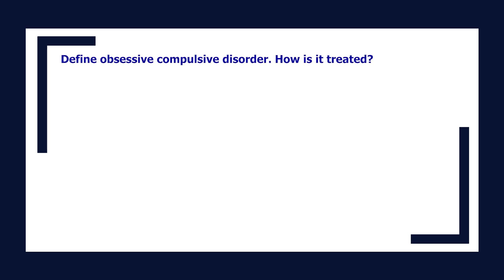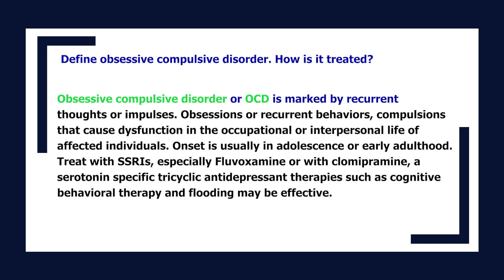Define obsessive-compulsive disorder and how it is treated. OCD is marked by recurrent thoughts or impulses (obsessions) or recurrent behaviors (compulsions) that cause dysfunction in the occupational or interpersonal life of affected individuals. Onset is usually in adolescence or early adulthood. Treat with SSRIs, especially fluvoxamine, or with clomipramine, a serotonin-specific tricyclic antidepressant. Therapies such as cognitive behavioral therapy and flooding may be effective.